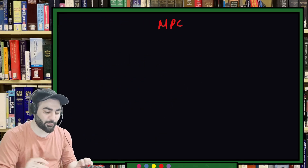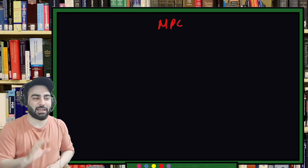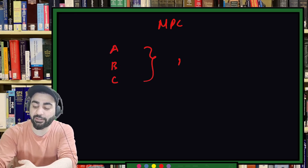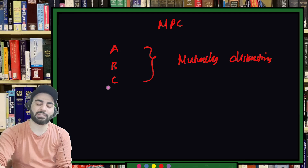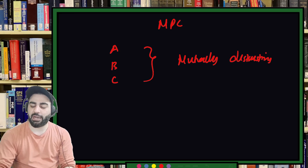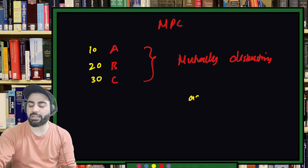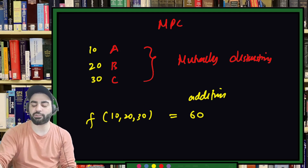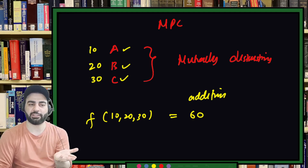Let's go into a bit more detail on MPC. In MPC, suppose you have three parties — party A, party B, party C. They are mutually distrusting: A does not trust B and C, B does not trust A and C, C does not trust A and B. Let's say A has number 10, B has number 20, and C has number 30. They want the addition F(10, 20, 30) = 60. Each party wants the result but should not share their number with the others — that's multi-party computation.